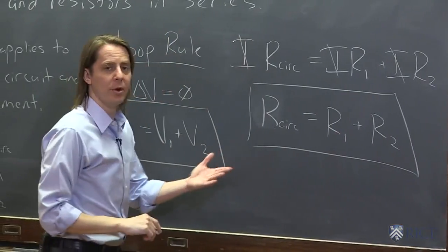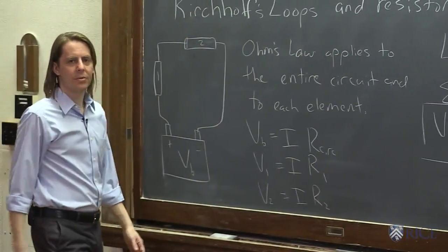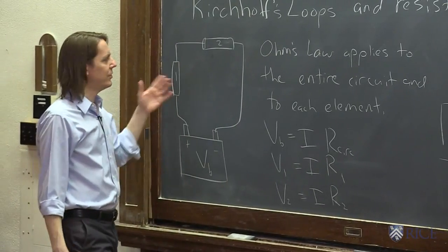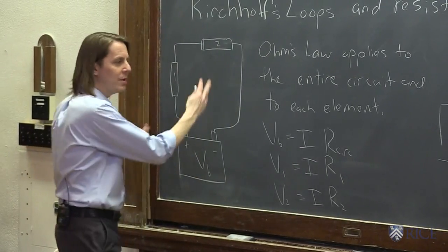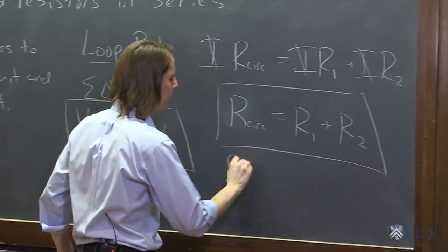So this is always true. Whenever you have resistors in series, all you do is add their resistance. That's how you get it. The effective resistance of two is adding it. If there were three in series, you add all three. They just add. So this is resistors in series.